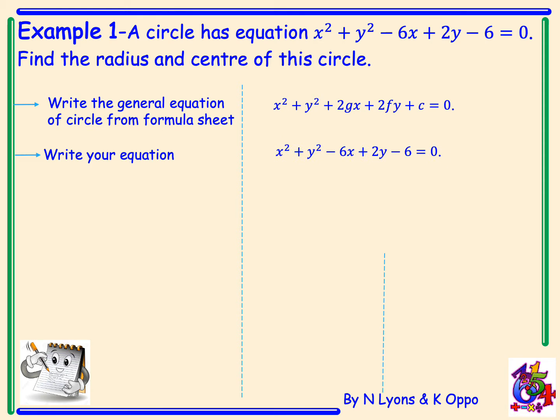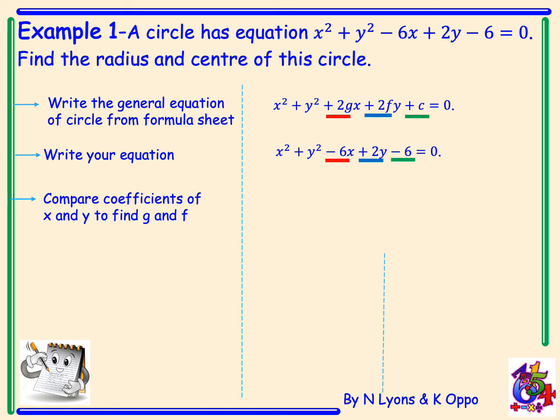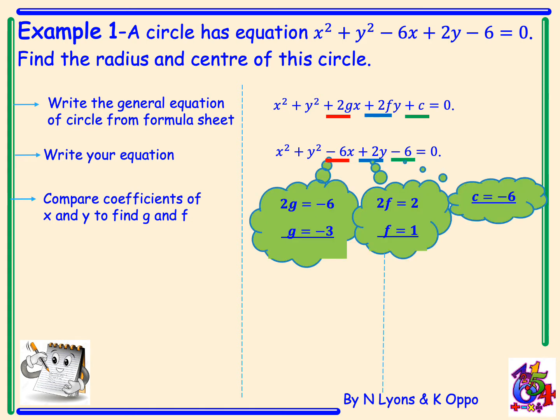Once we've done that we can compare our coefficients of x and y to obtain g and f. So 2g equals negative 6, which gives g equals negative 3. 2f equals 2, therefore f equals 1, and the value of c is negative 6.